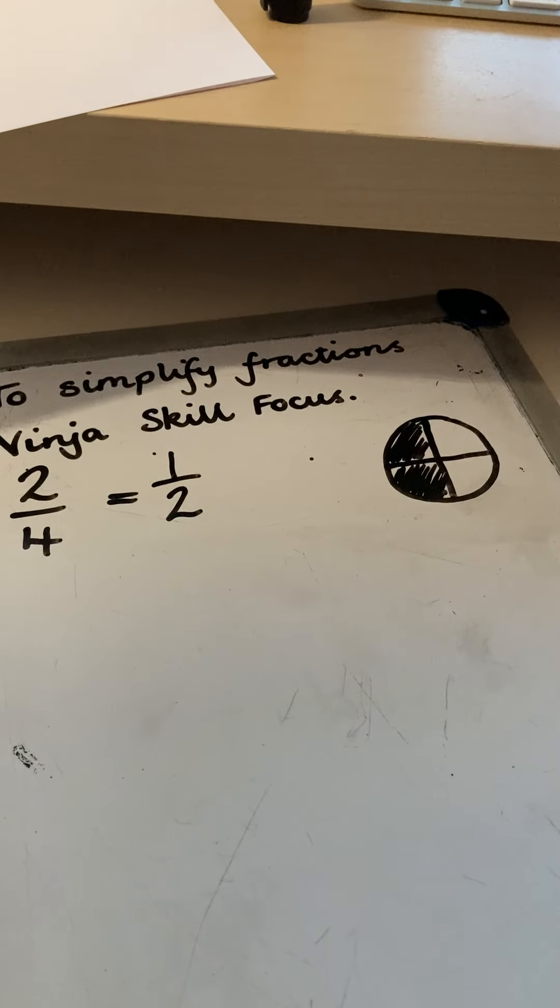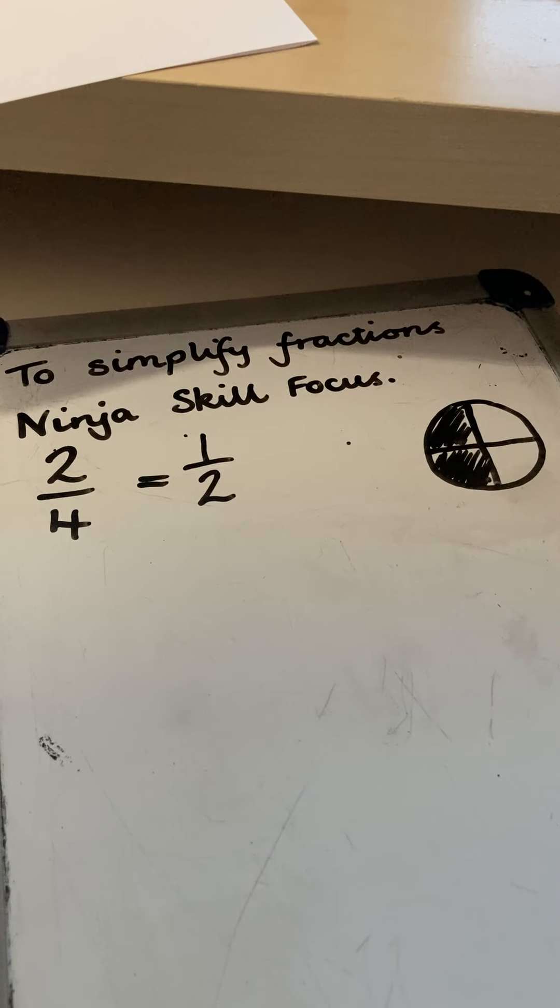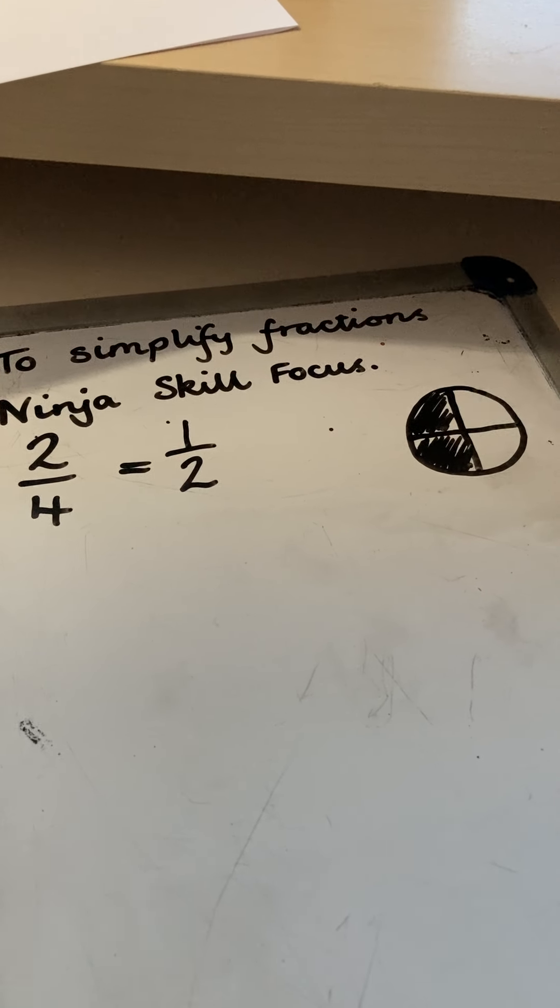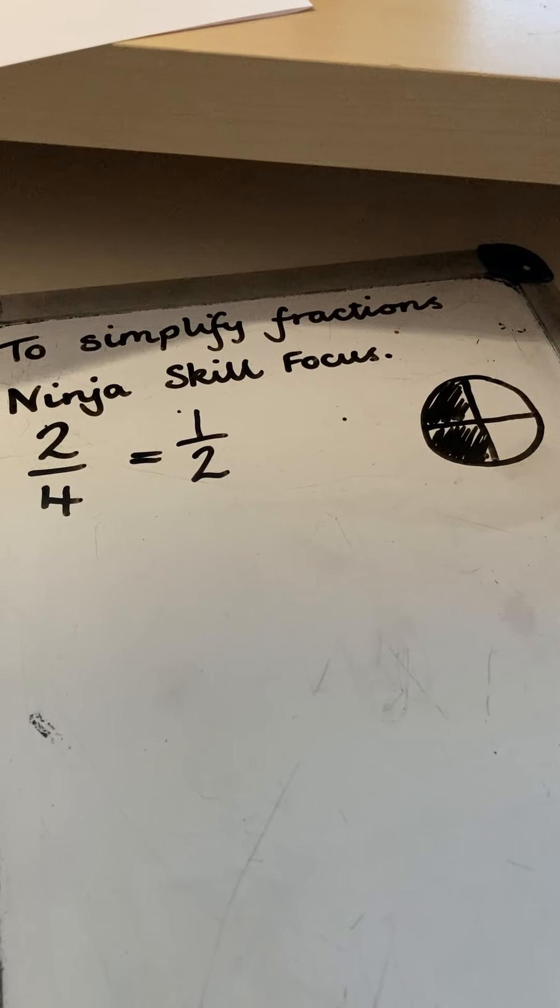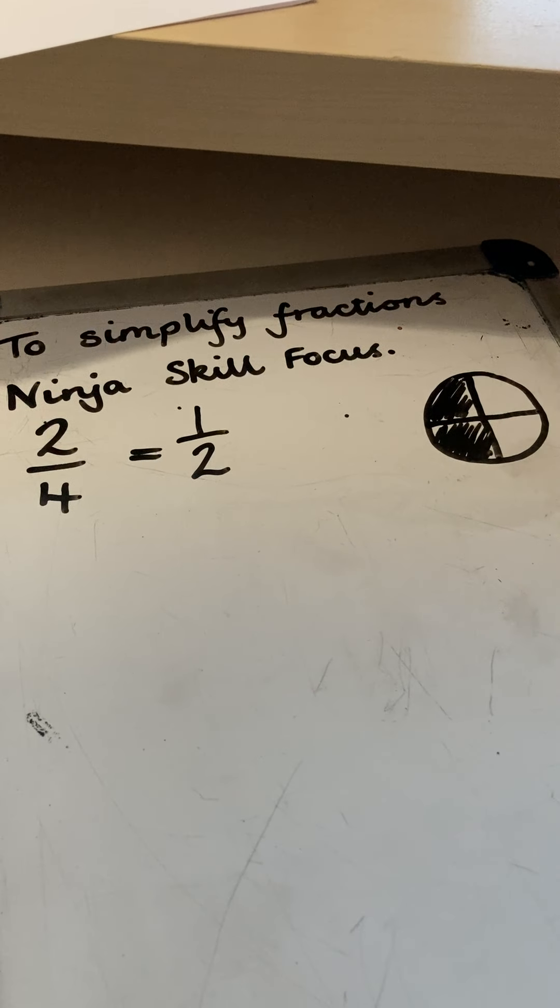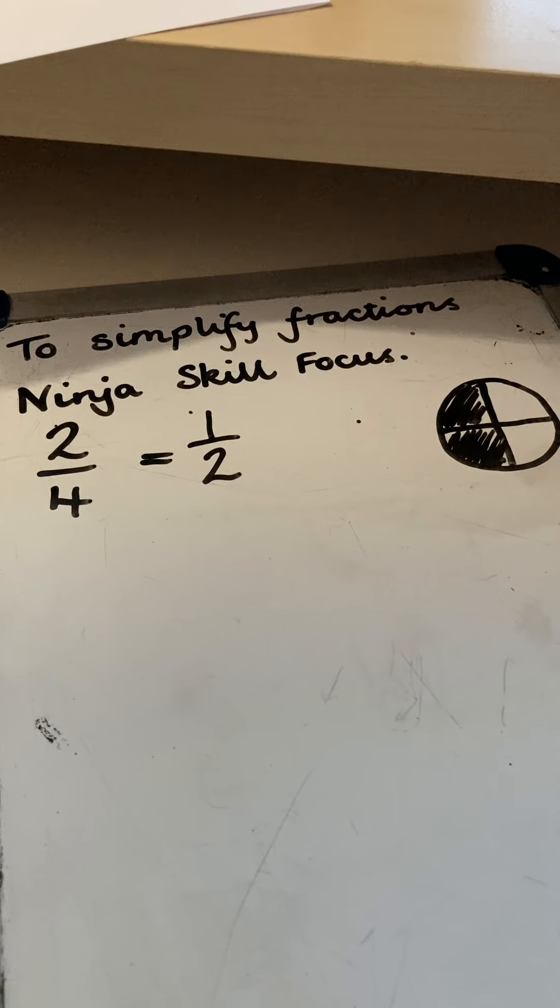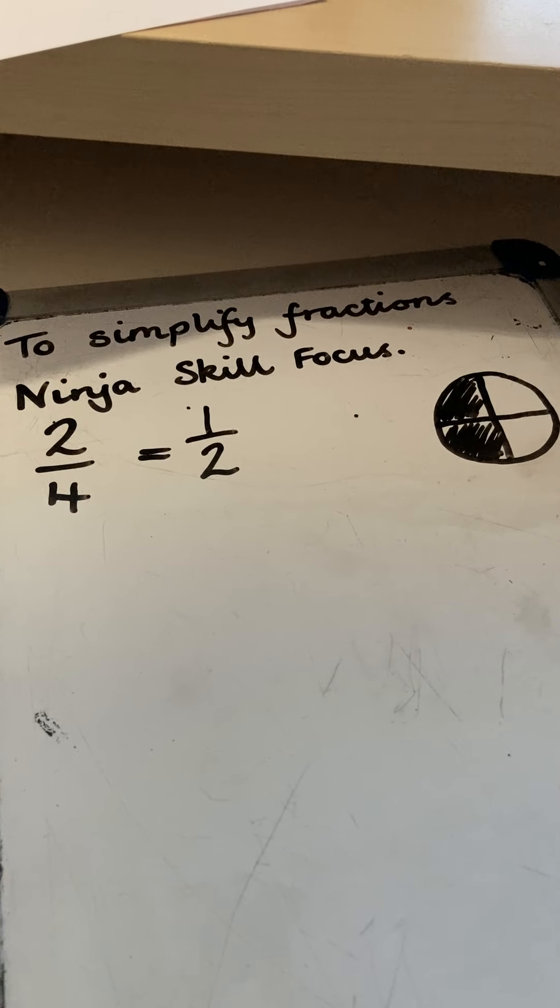Now it's not always possible to keep shading in fractions on pieces of paper, so we need to use some other skills. I've already shown you how to use the multiplication grid. So you can use that. You can also use your knowledge of your tables.